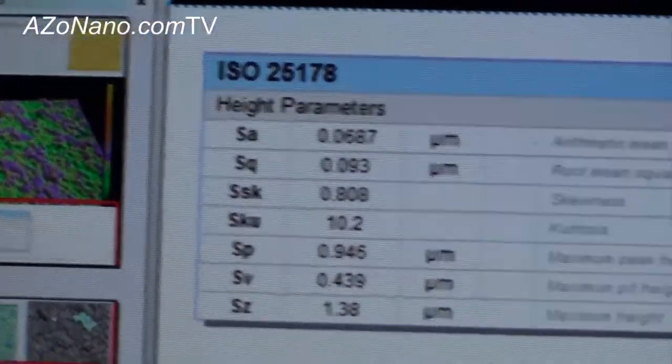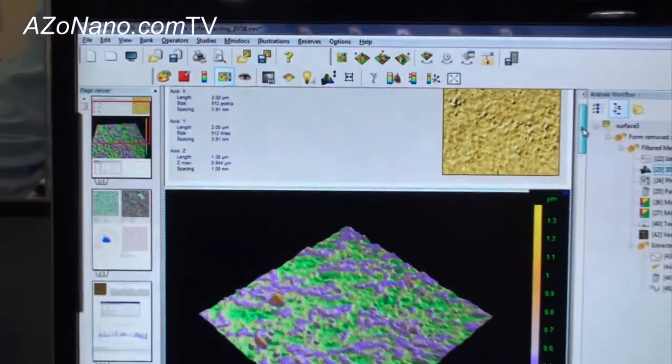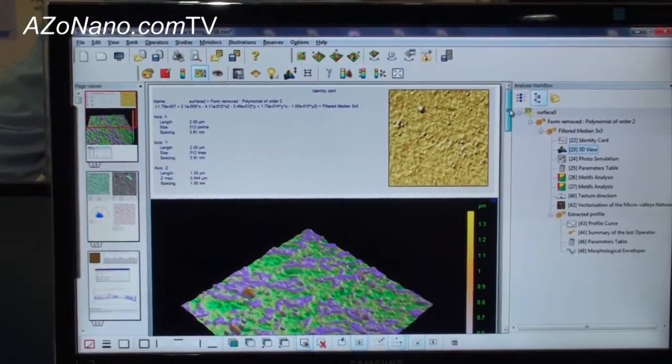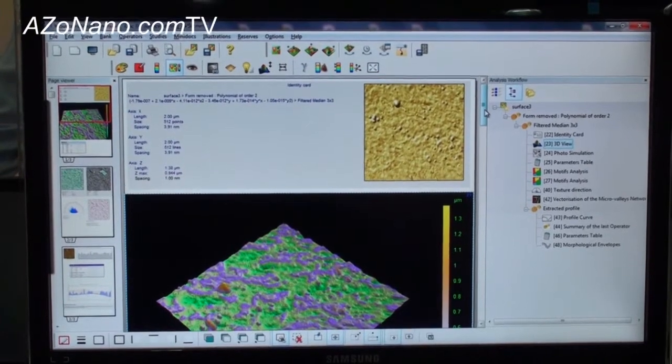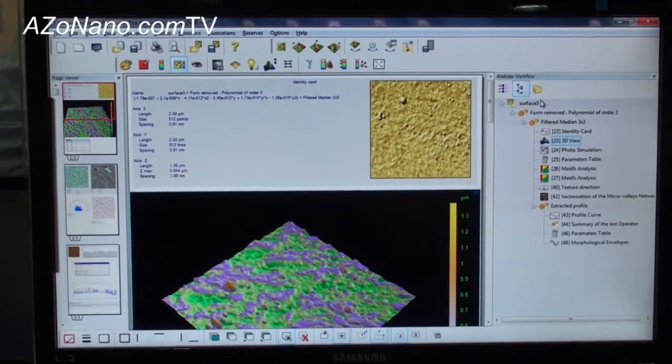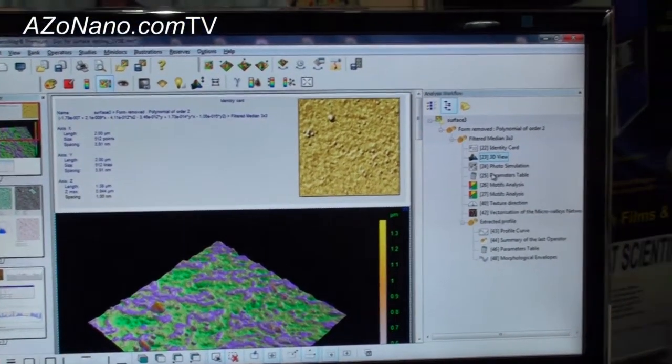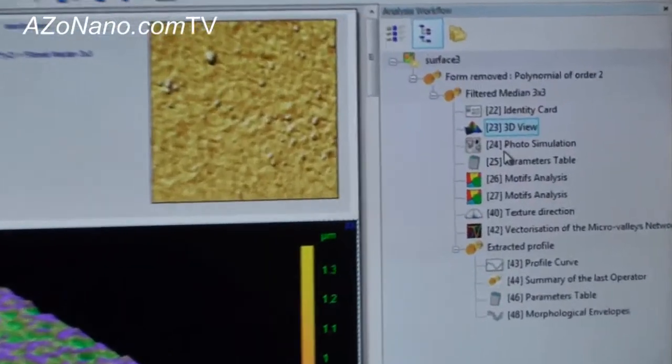In the center, you have the active part of the document in order to work on the application and to highlight some characteristics of the surface. And on the right side of the user interface, you can see the analysis workflow, which is the information contents into the document.